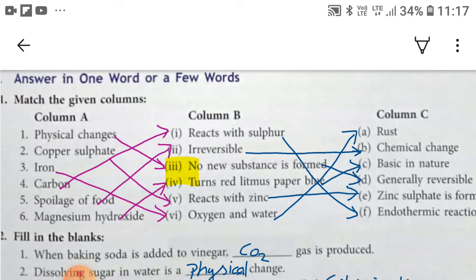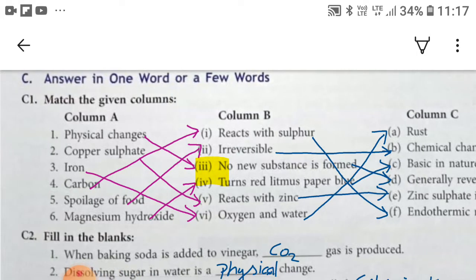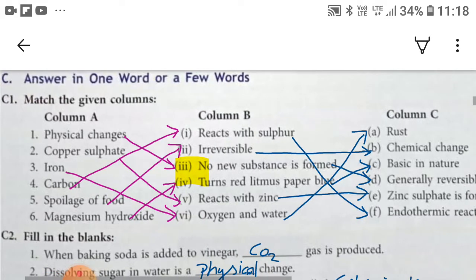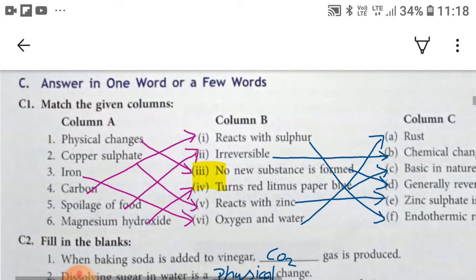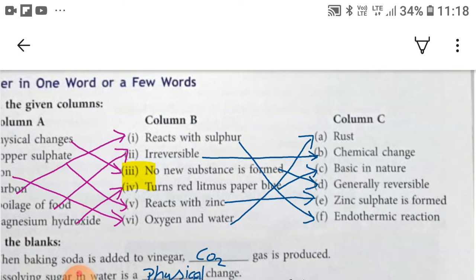Third, copper sulfate can be matched with reacts with zinc, and reacts with zinc can be matched with zinc sulfate is formed. And third, iron can be matched with oxygen and water, and oxygen and water can be matched with rust.